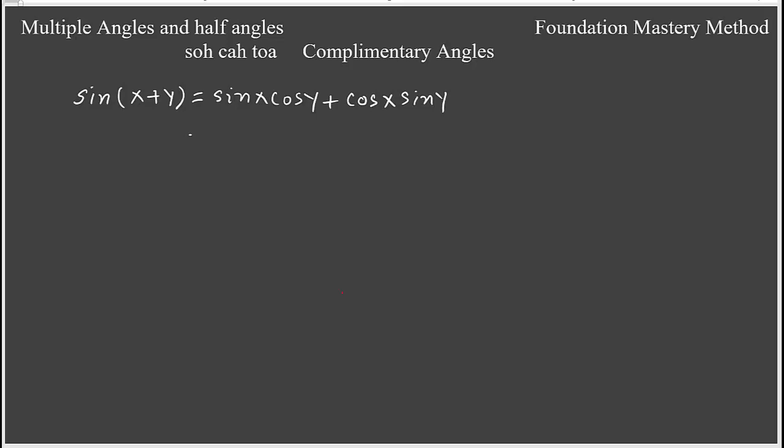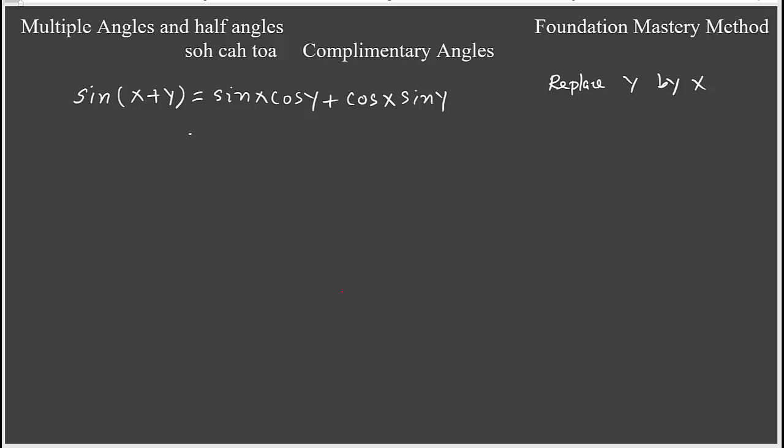Now we are going to produce multiple angles and half angles. So first we know sine x plus y is sine x cosine y plus cosine x sine y. If we replace y by x then what happens?